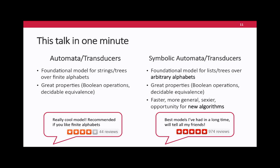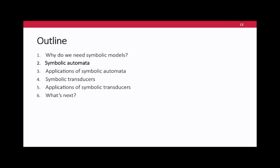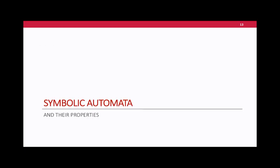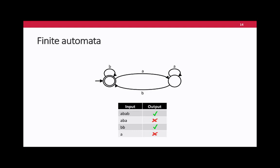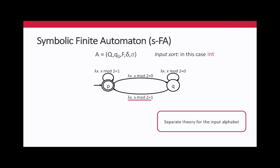We can take classic algorithms and make them much more interesting. The review would say: best models of any time, will tell all my friends. Now let's see what these models look like. A symbolic automaton looks the same as a normal automaton — it has states and transitions — but the labels on transitions are not concrete characters, they are predicates. A character crosses a transition if it satisfies the predicate on that transition. Importantly, the predicates are a separate theory from the automaton — there is an alphabet theory which tells you what type of predicates you can have.